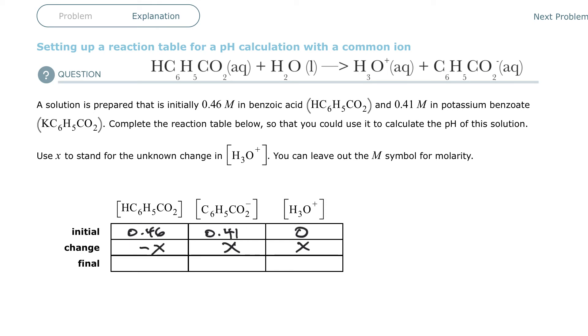Now, the final is just add them together. So if you have 0.046 and a minus x, you add them together as 0.46 minus x. Pretty simple. This is 0.41 and a positive x, so it's going to be 0.41 plus x. And then the last will be 0 plus x, and it will be x.